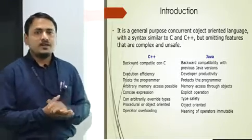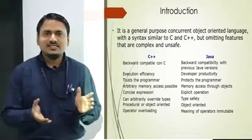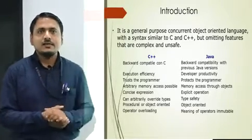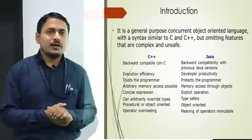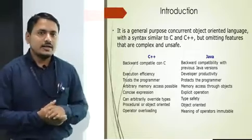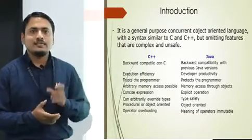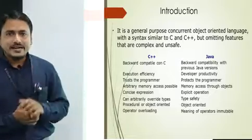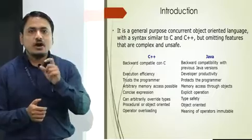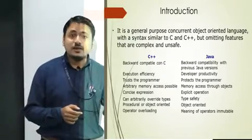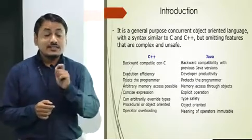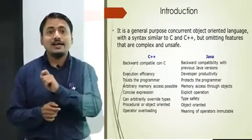Another difference is that in C++ there is a concept of template, but in Java there is no facility of template. Also, whenever you execute a C++ program it must create an executable file, but in Java there is no executable file. In Java we specifically create an intermediate code known as bytecode, and the extension of that bytecode is a dot class file. The C++ file extension is dot C++, but in Java it is dot java. That is a great difference between C++ and Java.